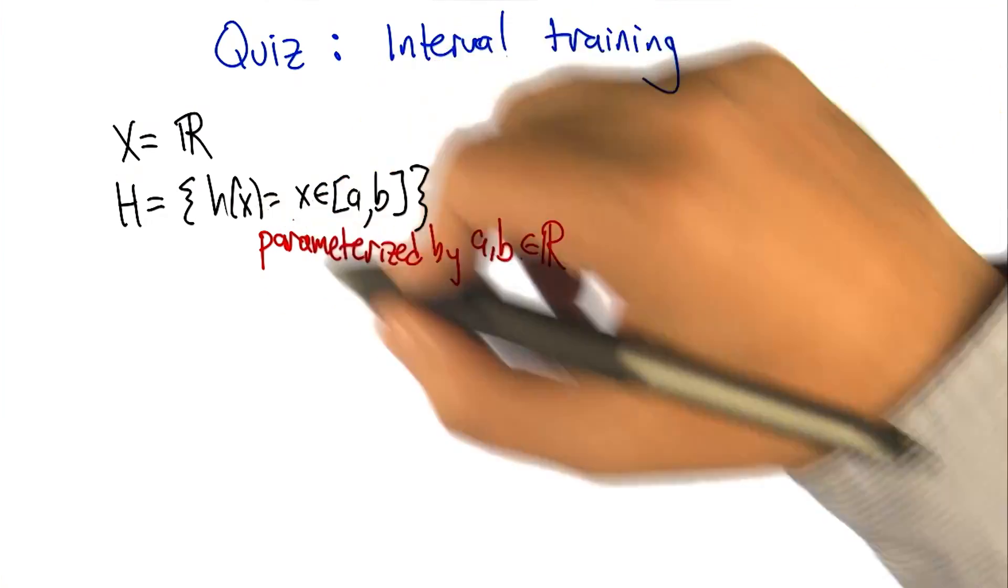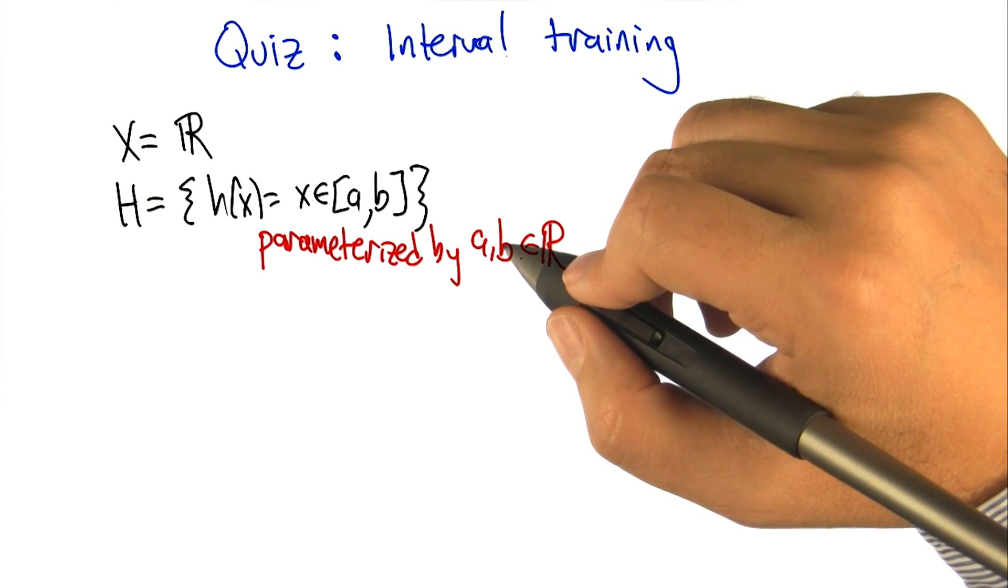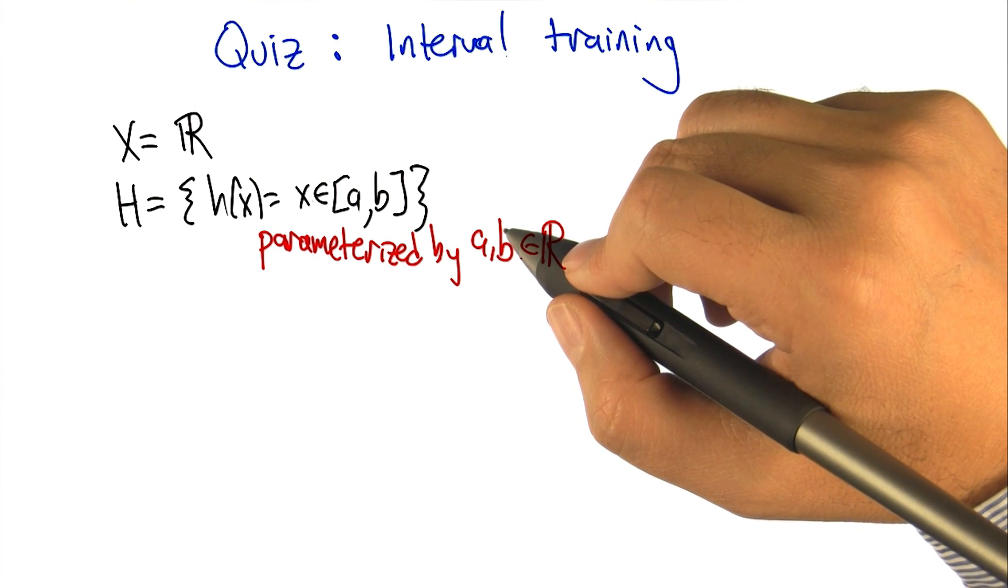So how many different hypotheses are there in our class here? At least two. Sure. How about how many are there in the class? There's an infinite number of them. That's right.